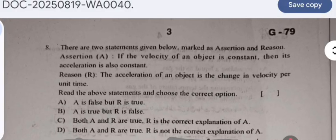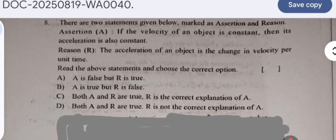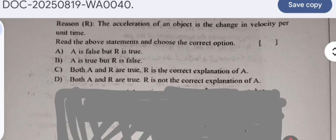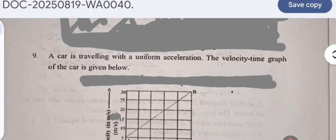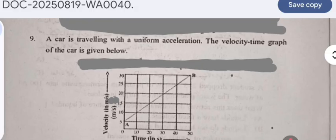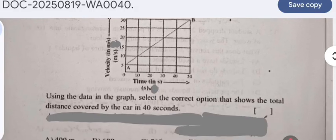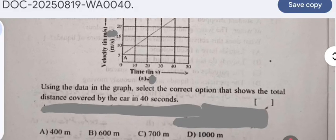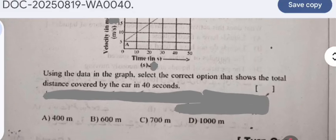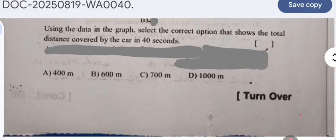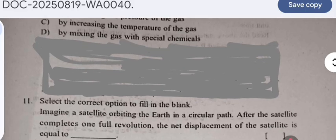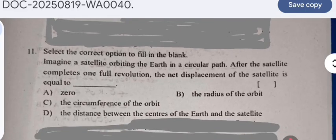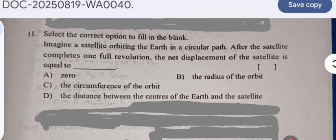On page three, question 8 contains assertion and reason statements. You have to pick up the correct answer. Question 9: A car is traveling with uniform acceleration. The velocity-time graph of the car is given below. Using the data in the graph, select the correct option that shows the total distance covered by the car in 40 seconds.